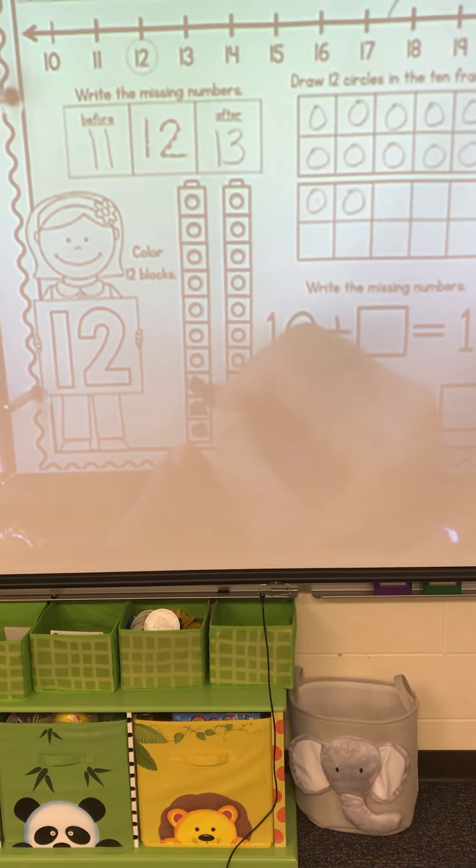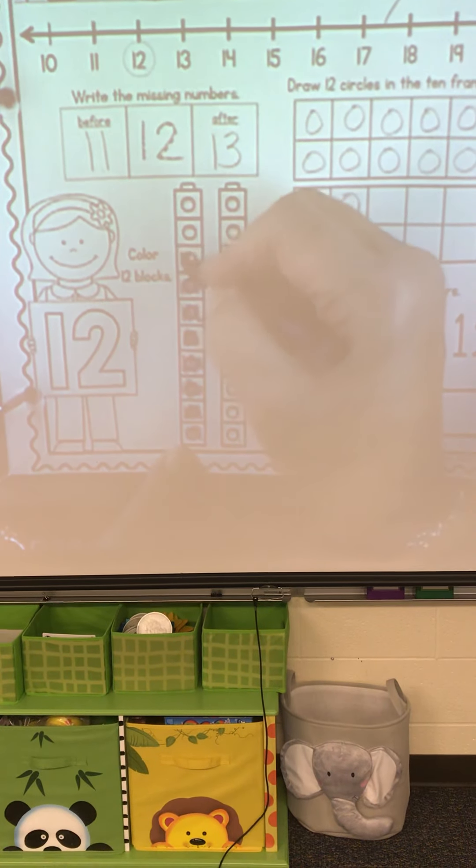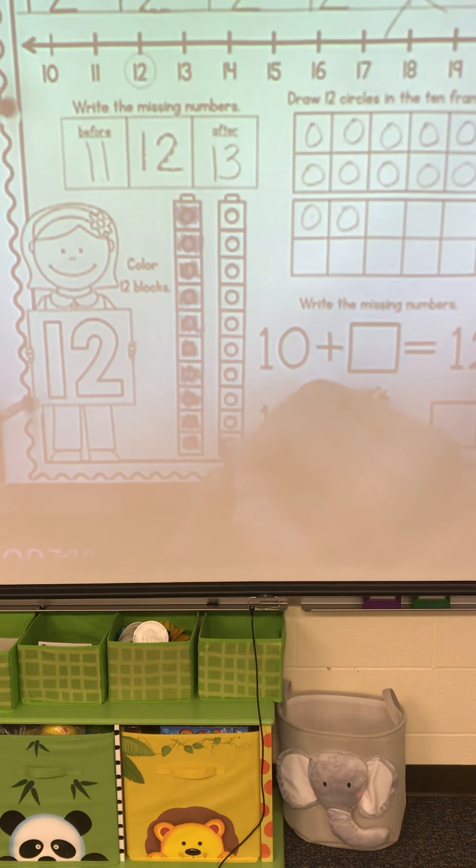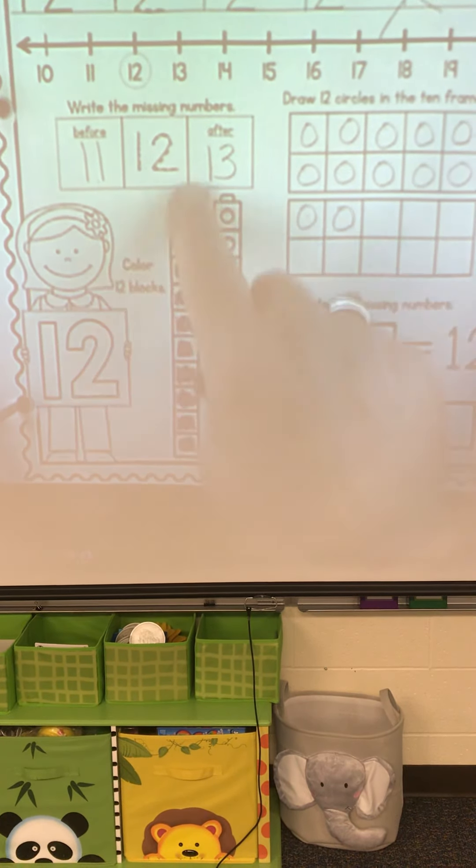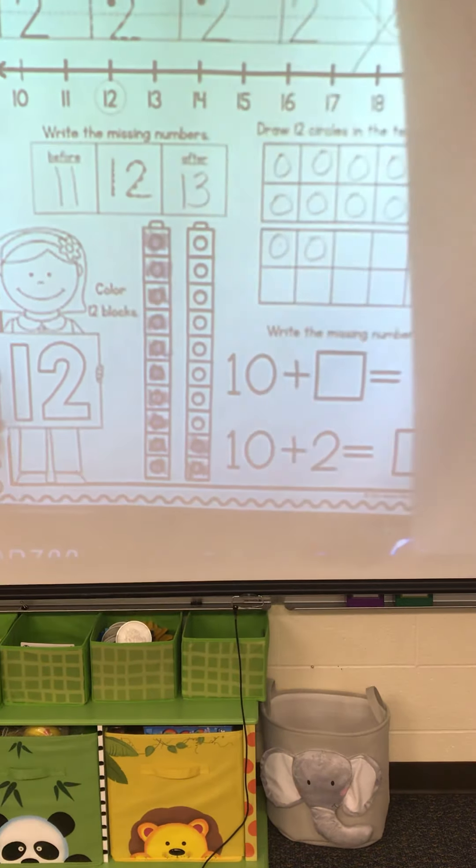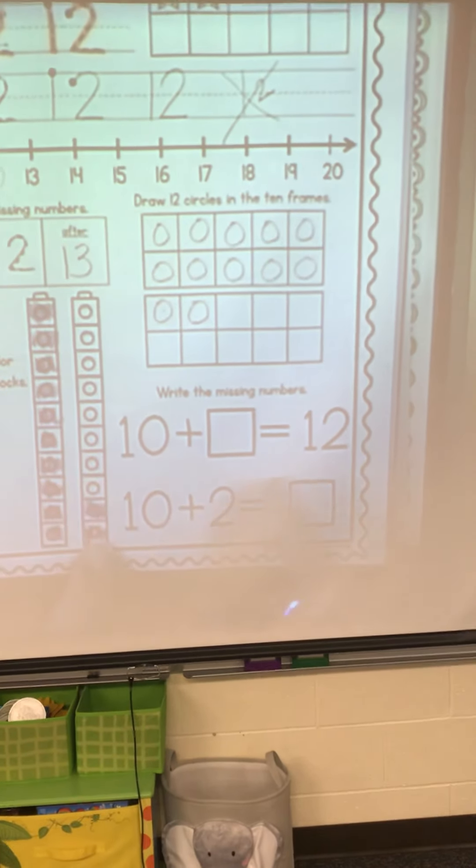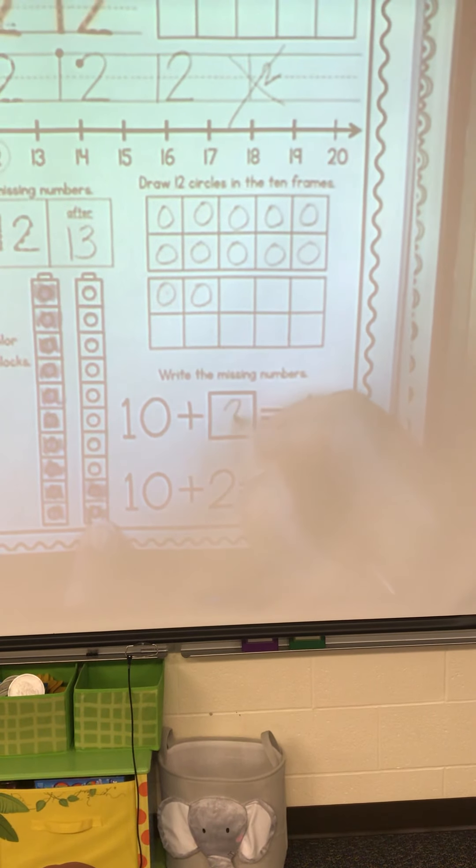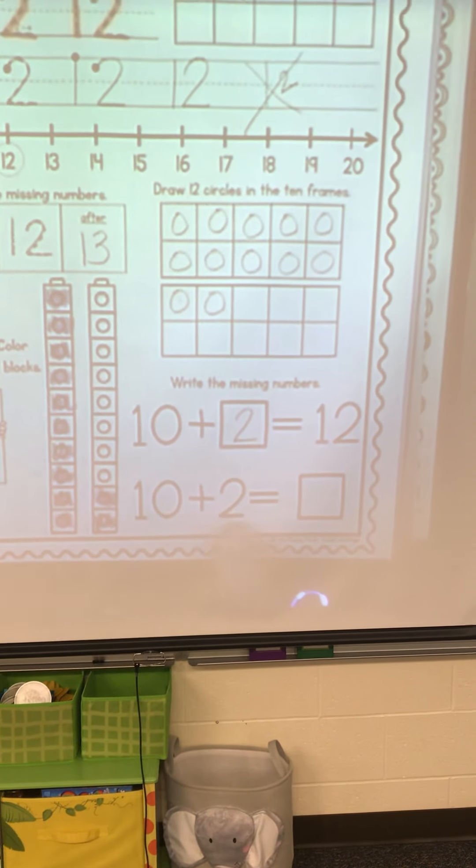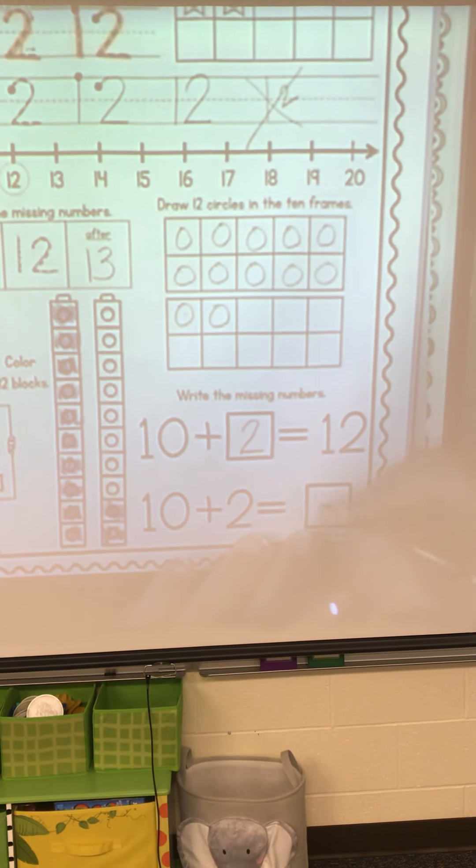Quick color. 1, 2, 3, 4, 5, 6, 7, 8, 9, 10. And then go back to the bottom. 11, 12. 10 and 2 make 12. I just told you the answer. 10 plus, there's 10, plus how many more equals 12? 2. So 10 plus 2, 10 plus 2 equals 12.